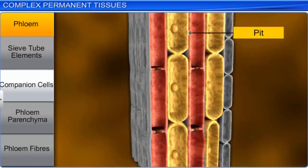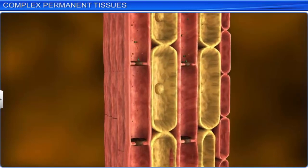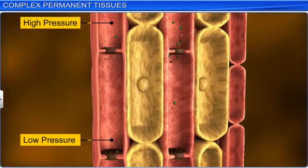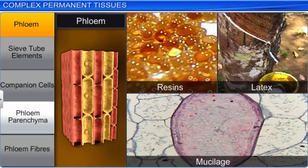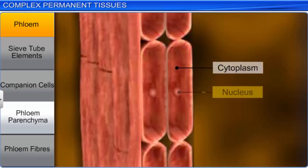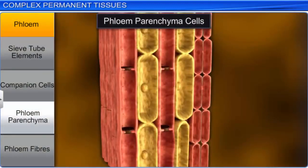The companion cells also help in maintaining the pressure gradient in the sieve tubes. The functions of sieve tubes are controlled by the nucleus of the companion cells. Phloem parenchyma stores food material and other substances like resins, latex, and mucilage. It consists of elongated, tapering cylindrical cells that have dense cytoplasm and nucleus. The cell wall of phloem parenchyma is made up of cellulose, and it has pits through which plasmodesmatal connections exist between the cells.